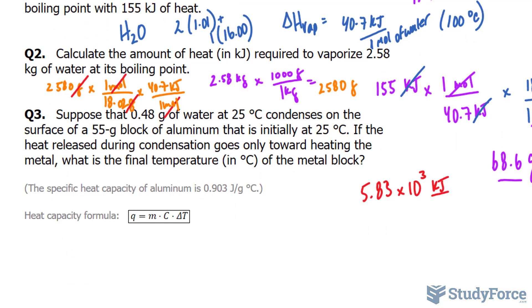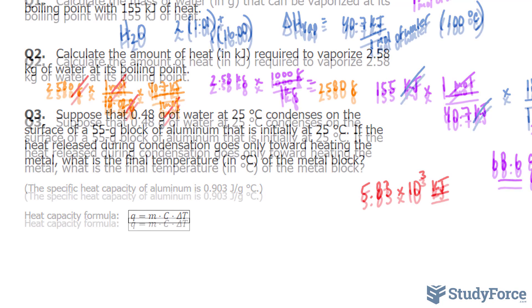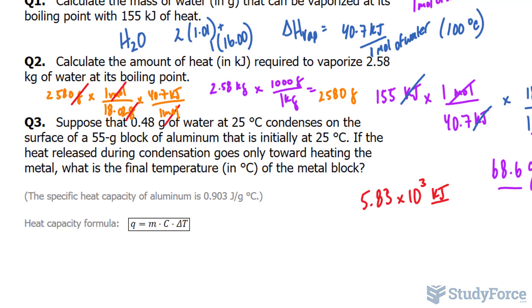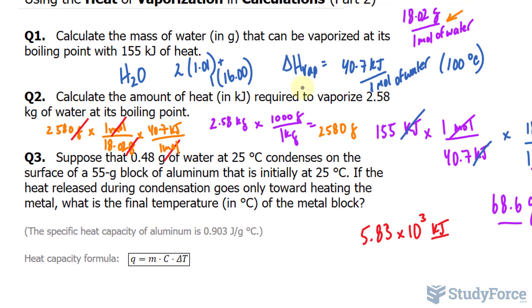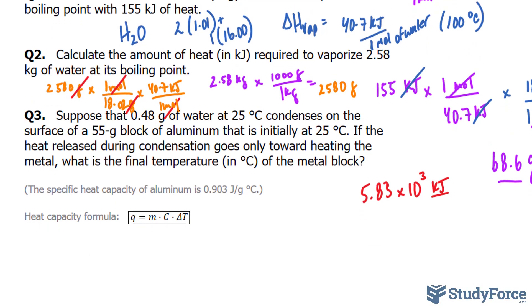The first thing that we want to do is calculate how much energy is being lost by this water. We can do that by using one of the numbers from question number one, namely the heat of vaporization of water. We found out that it was 40.7 kilojoules per every one mole of water at 100 degrees. So I'm going to rewrite that: 40.7 kilojoules per one mole of H2O.